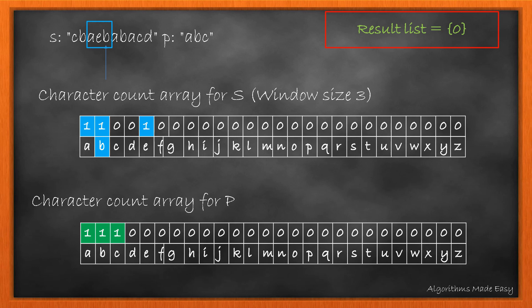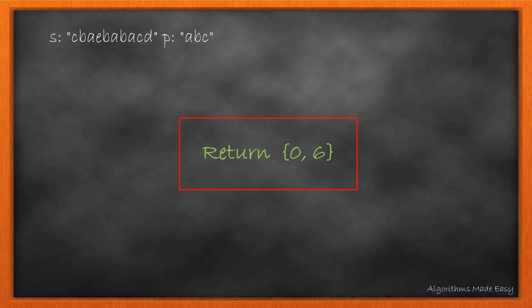Similarly, we compare each window in S to find if it matches the anagram P till we reach the last character in S. After comparing the window with the last character of string, our result list contains indexes 0 and 6. So, we return it.